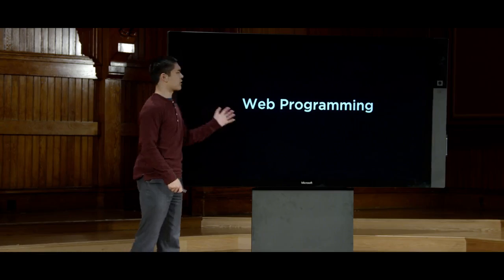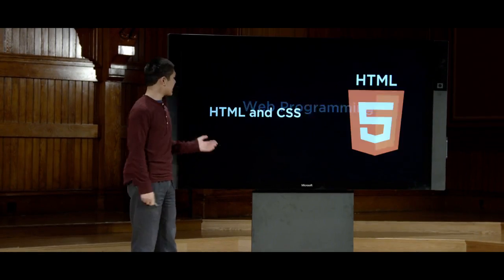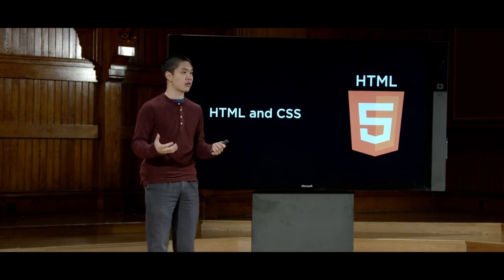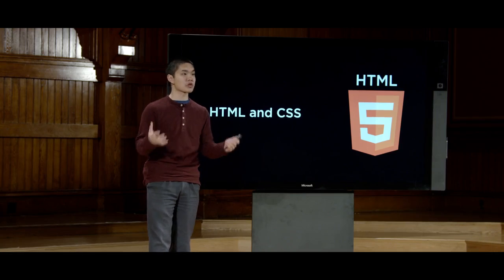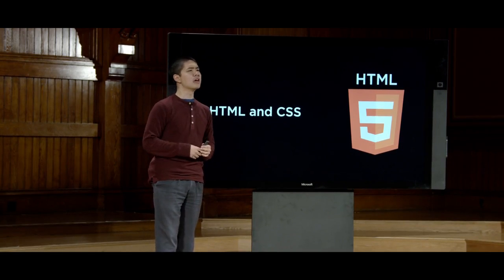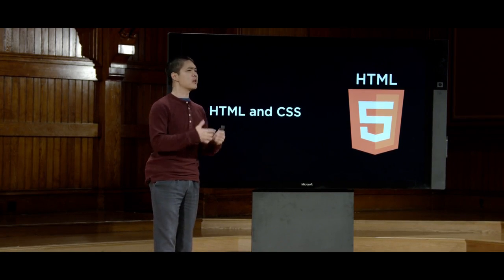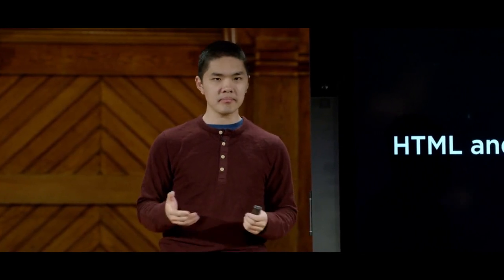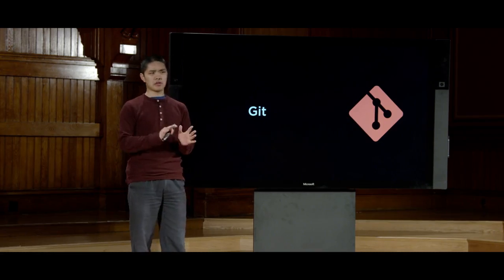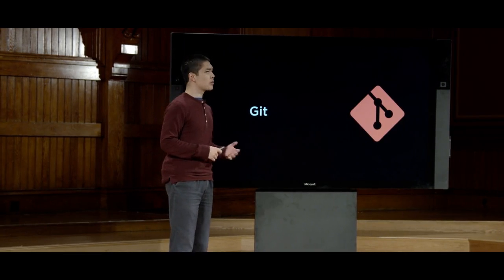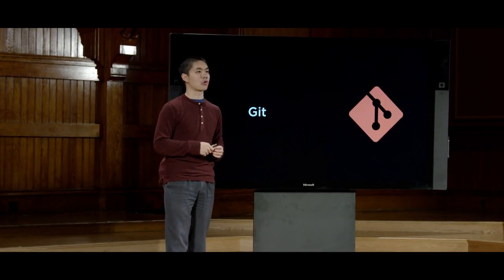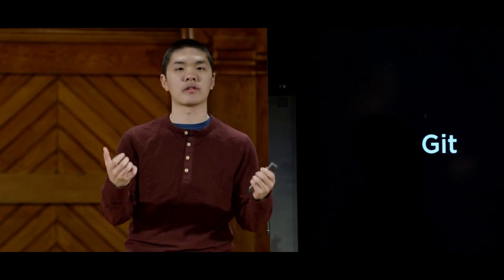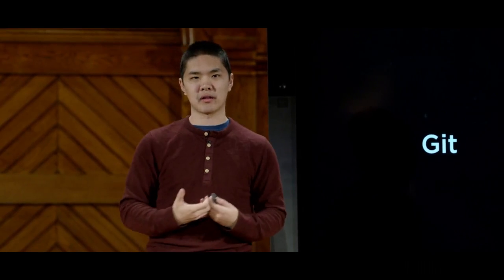Throughout the term, we'll cover a number of topics, beginning with HTML5 and CSS3, two languages central to understanding web pages. HTML describes the structure of a web page, and CSS describes the style — the colors, fonts, layouts, and spacing. After that, we'll turn our attention to Git, a tool we can use to version control our programs, track changes, and work on various parts of the web application before merging those pieces back together.